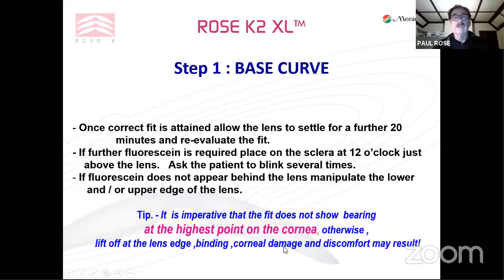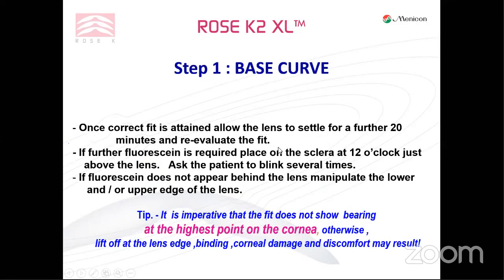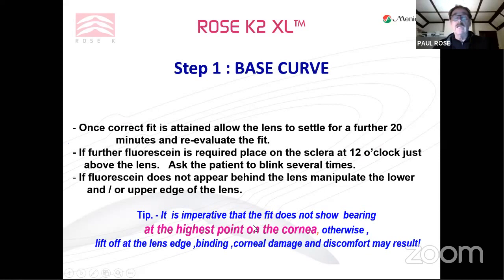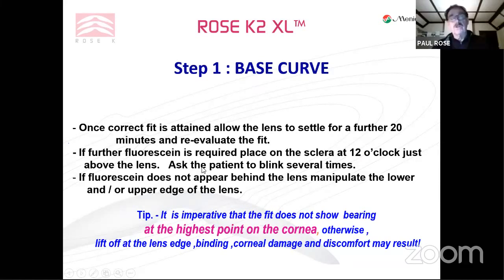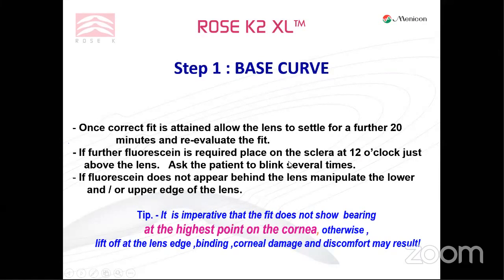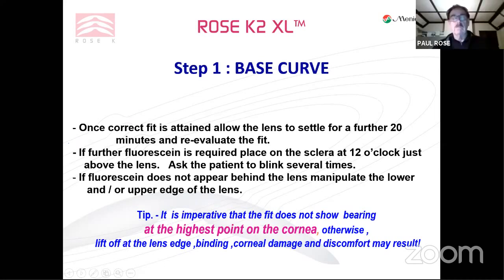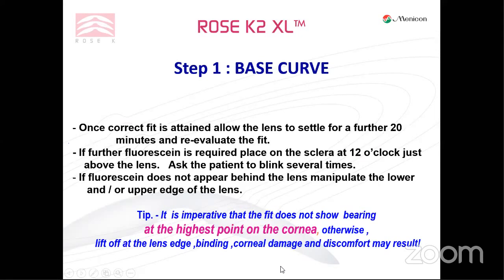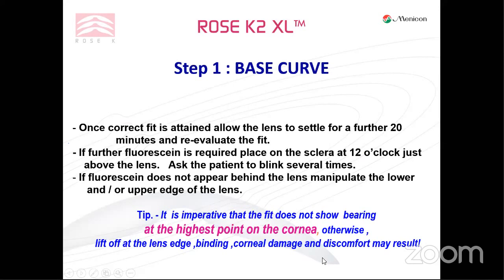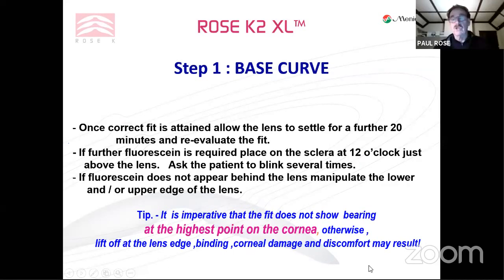The settling time with XL is quite short — as short as 20 minutes. If fluorescence is required further, just place it on the sclera, get the patient to blink a few times, manipulate the lens a little, and fluorescence should appear behind the lens. The biggest problem people make with my XL design is leaving the base curve flat. It is imperative you do not show bearing at the highest point on the cornea — otherwise it can cause lift-off at the edge, binding, corneal damage, and discomfort.